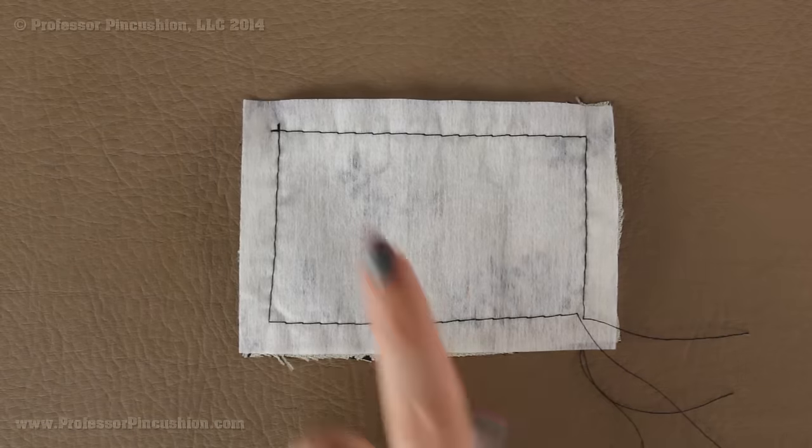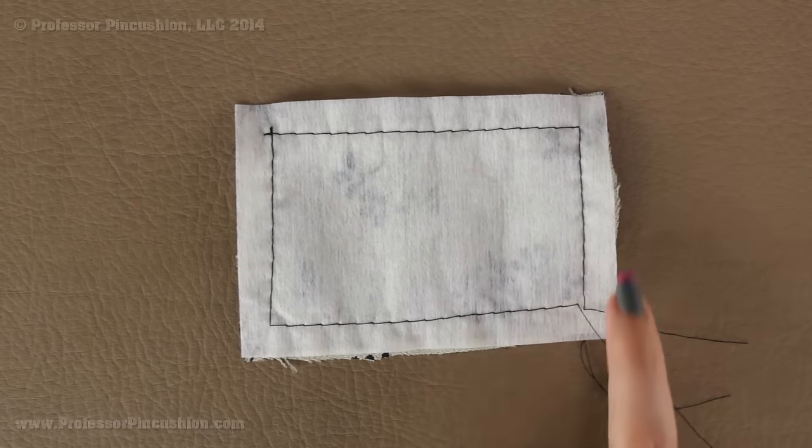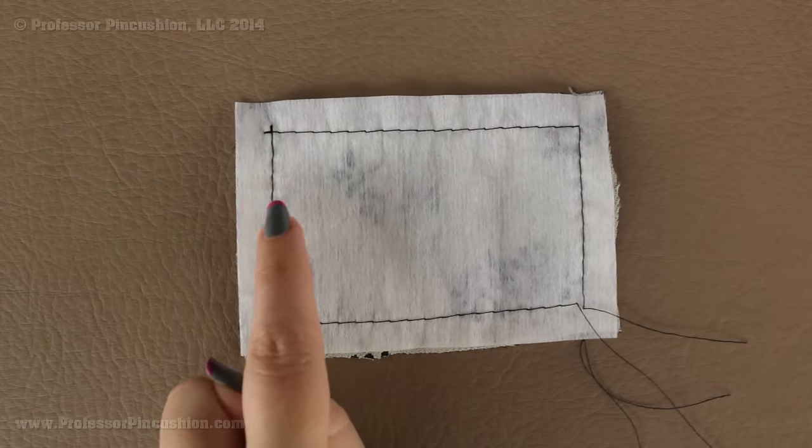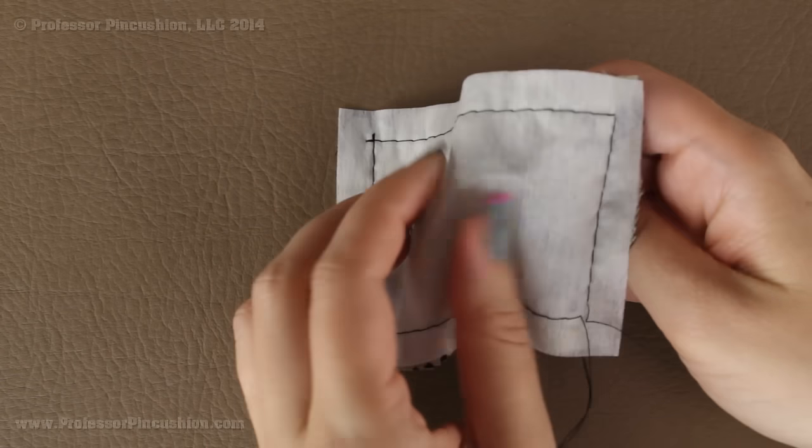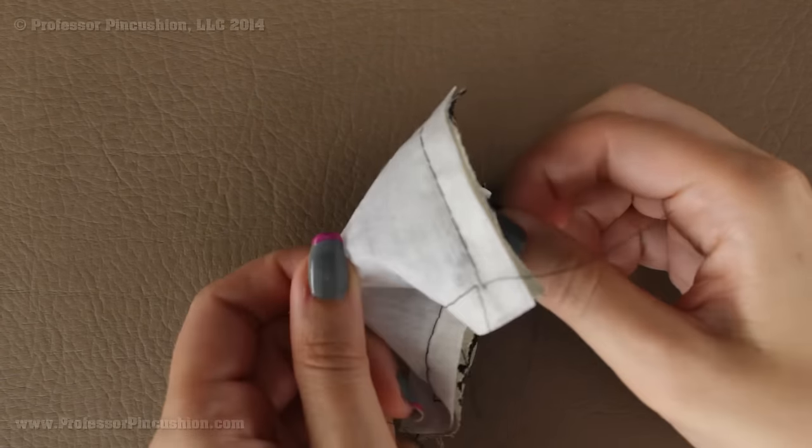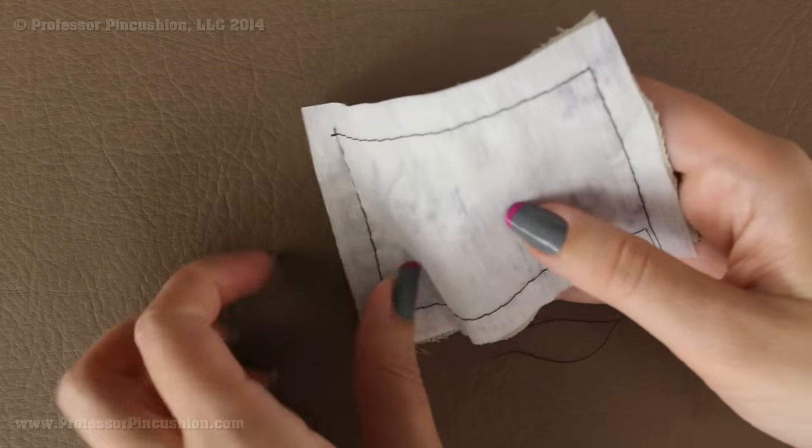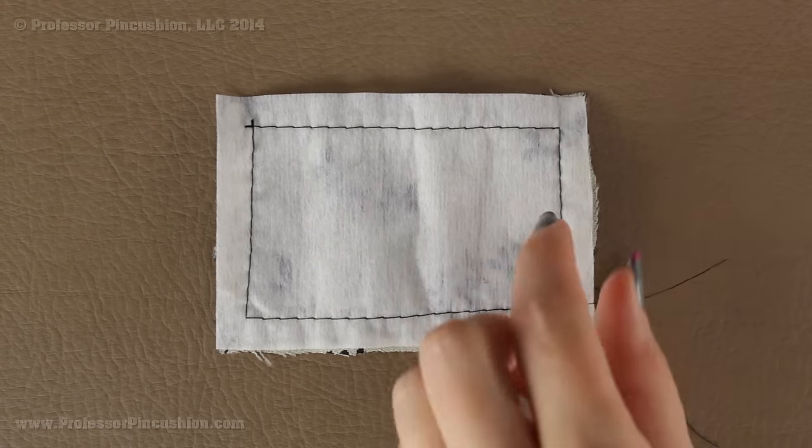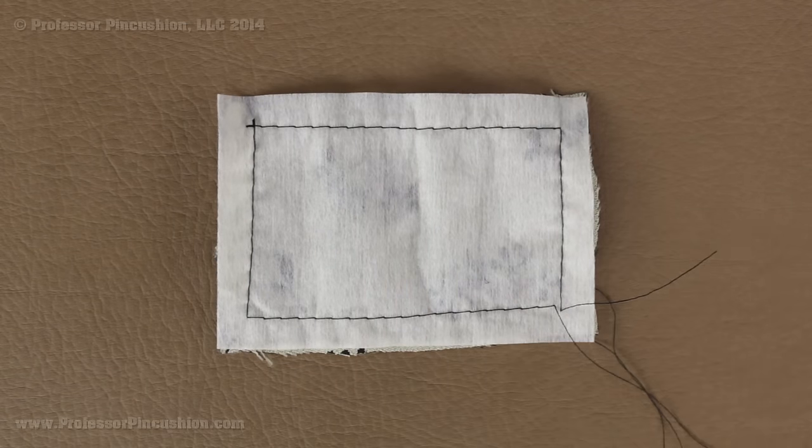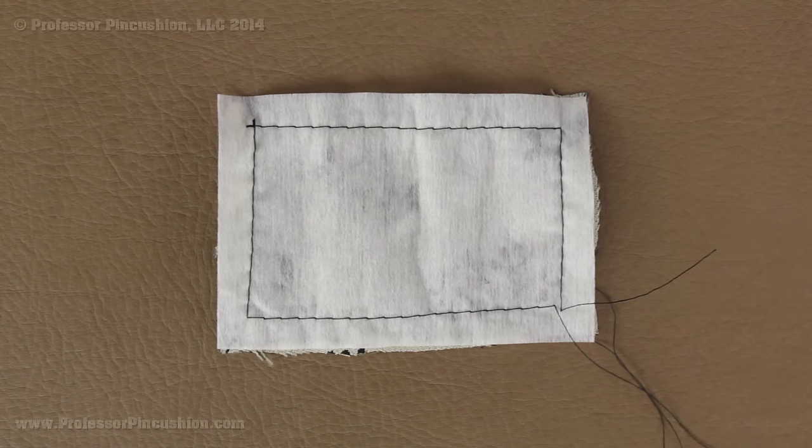When everything is sewn together the sew-in interfacing is really only attached at where you do your stitches. So in the seam allowance I can actually pull apart the interfacing and the fabric. It's not attached in the middle. So if you make a mistake you can actually remove your stitches and then take the interfacing off and redo if you need to. You would use the same technique if you're also attaching organza as an interfacing to your chiffon.